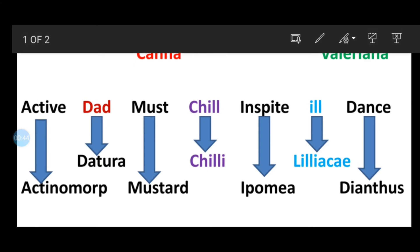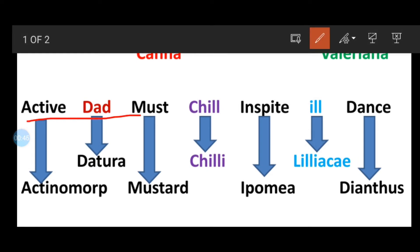Now second one you can see: Active dad must chill in spite ill dance. Means dad who is active he is enjoying and in spite ill he is also dancing. Now active stands for actinomorphic. Means the flower can be divided into two equal halves from more than one plane.